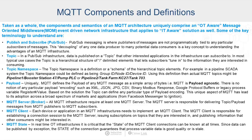Finally, the definition of MQTT state. In real-time OT infrastructures, it is critical that the state of MQTT client connections be known at all times. Since data can be published by exception, the state of a connection guarantees that process variable data is good quality, or we know it's stale.